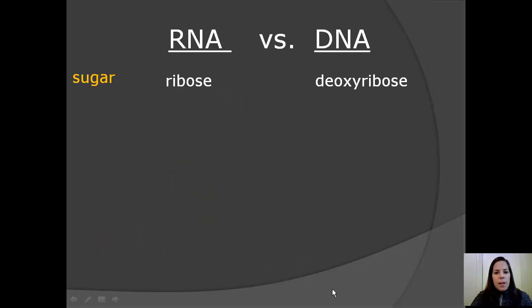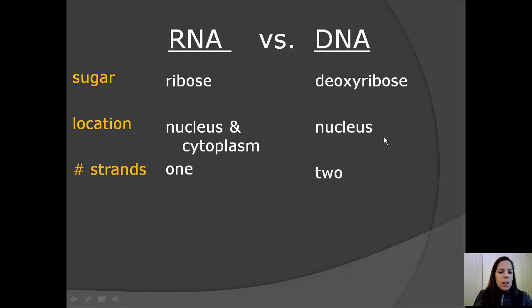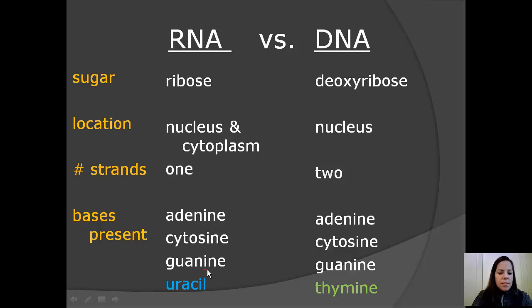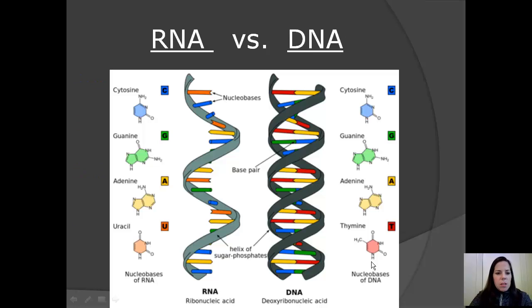Let's look at the main differences between RNA and DNA. First, we've got the sugar. In RNA, the sugar is ribose. In DNA, the sugar is deoxyribose. The location of RNA is in the nucleus and cytoplasm. For DNA, it's just in the nucleus. The number of strands, one for RNA and two for DNA. And the bases present in each of them are the same except for uracil and thymine. So if we look at this visually, we can see that RNA is single-stranded and DNA is double-stranded. We can see the difference in bases. There's uracil and there's thymine.